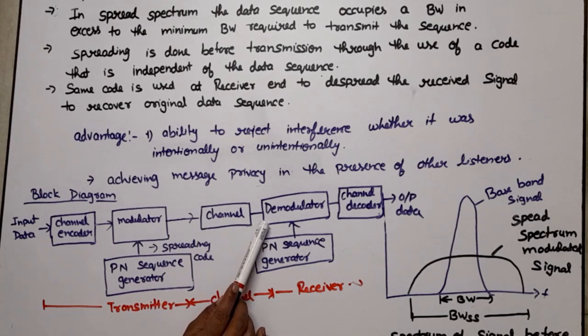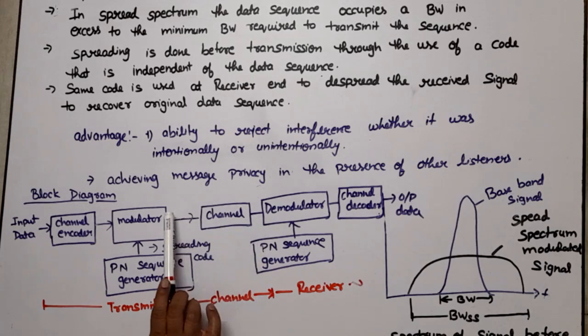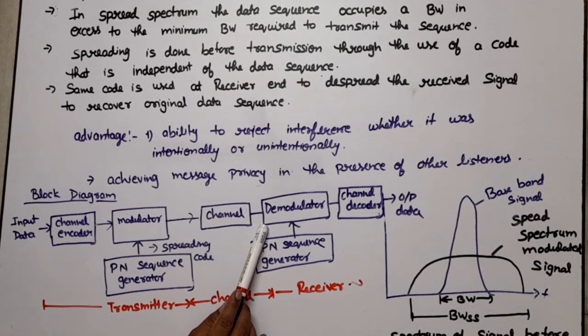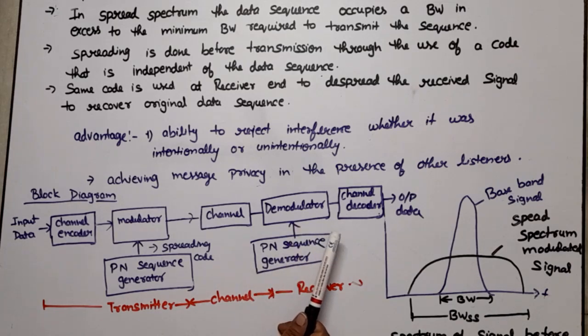So after spreading the channel, spread spectrum signal is passed through the channel. And at the receiver end, demodulator is just reverse of modulator, it does demodulation. For demodulation same sequence will be used, means the PN sequence or PN pattern used at the transmitter end and receiver end both should be synchronized. At the transmitter we use this sequence for spreading and at the receiver end we use the same sequence for despreading.